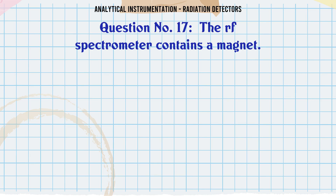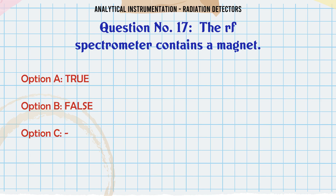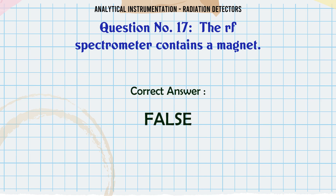The RF spectrometer contains a magnet. A. True. B. False. The correct answer is False.